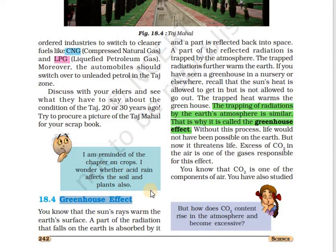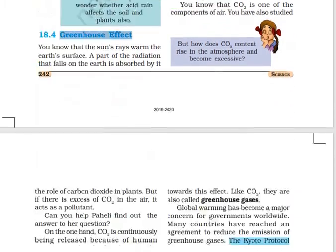The same happens in the atmosphere. There are certain gases called greenhouse gases — carbon dioxide, methane, water vapor, and nitrous oxide. These gases trap the sun's radiation but do not allow it to escape. So naturally the earth's temperature gets increased. This increase in the temperature of the earth is known as global warming.